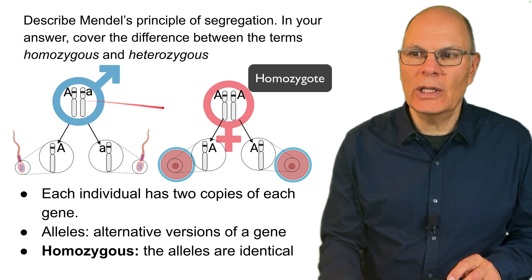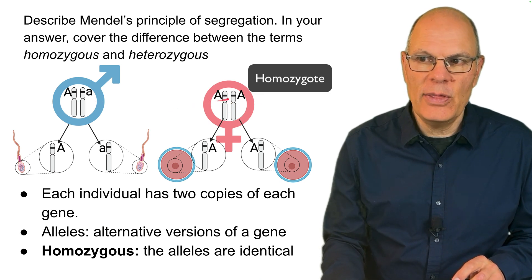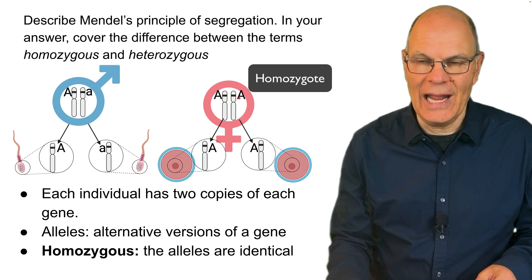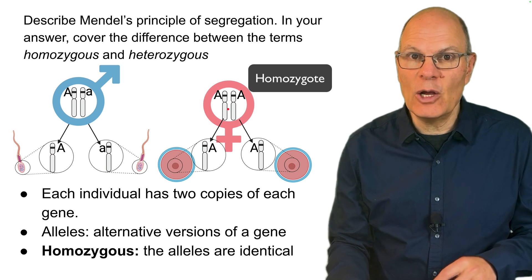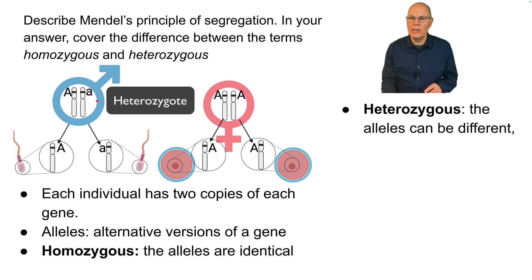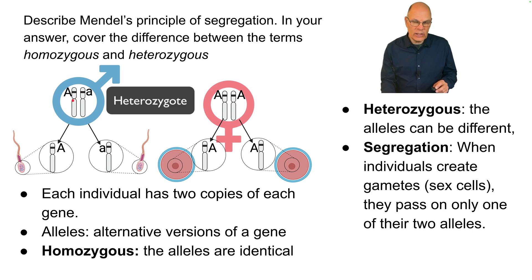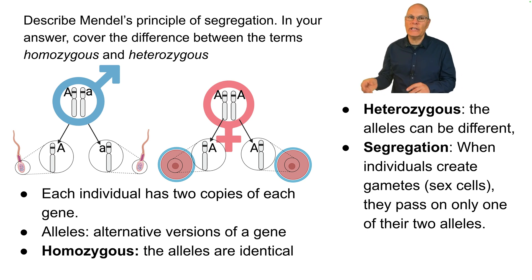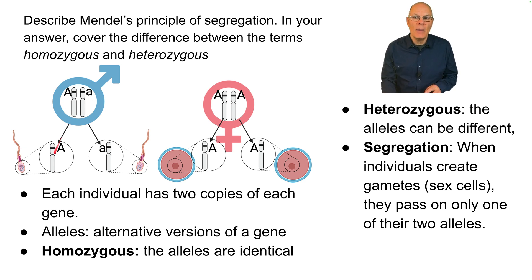Homozygous means that the two alleles are identical. For example, in this parent over here, both of the alleles are designated with a capital letter A — they're the same, so this person is a homozygote. In a heterozygote, the alleles can be different; in this individual, one allele is capital A and one is lowercase a. The principle of segregation shows that when individuals create gametes, their sex cells, they pass on only one of their two alleles. So the alleles are together in the parent but become segregated or separated during gamete formation.